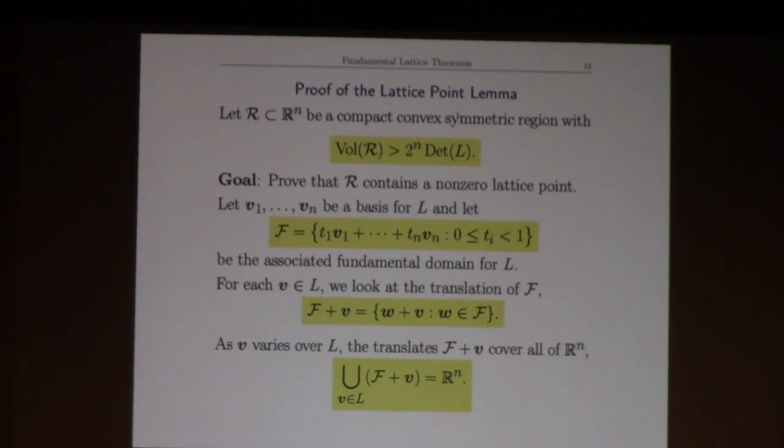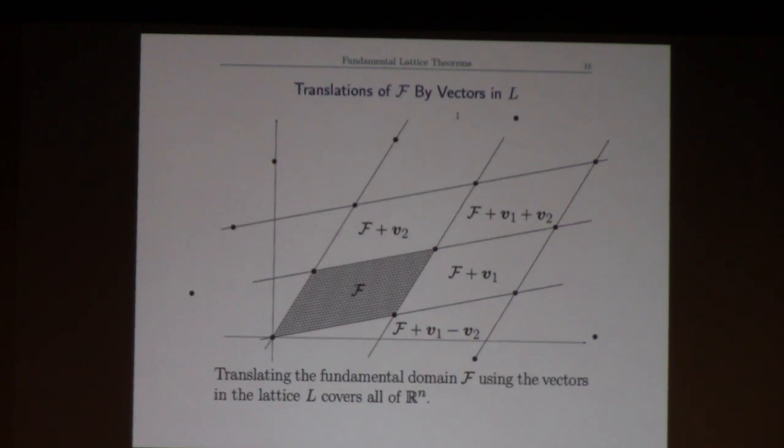As v varies over the lattice these shifted fundamental domains will cover all of R^n, because you take any point in R^n, you have this fundamental domain, when you shift they have a boundary side in common and they fill up all of space. So this is key fact number one: the shifts of the fundamental domain by the points in the lattice cover R^n, and they cover it disjointly essentially other than on the boundary. Here's the picture - here's my initial fundamental domain, shift it over, shift it up, over, up, over, down, and so on. It covers all of space pretty much disjointly.